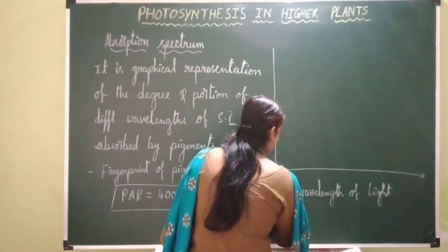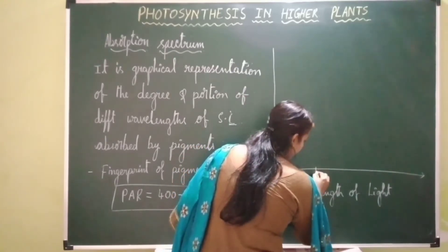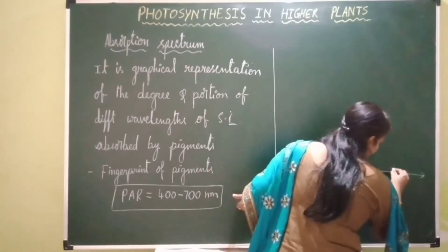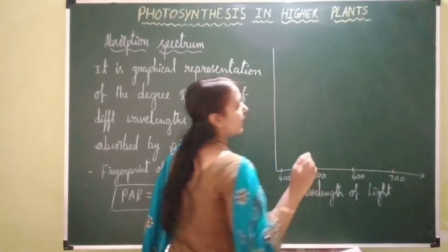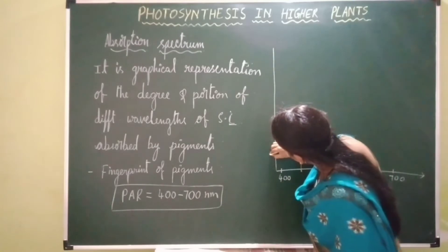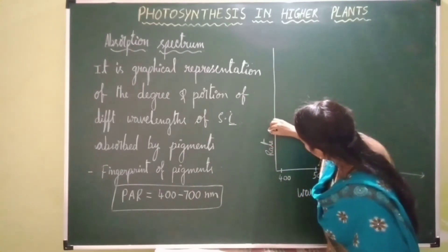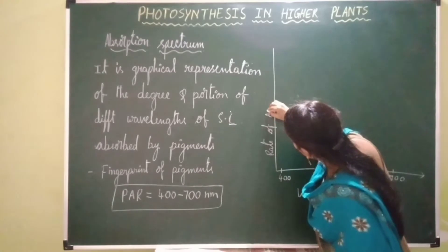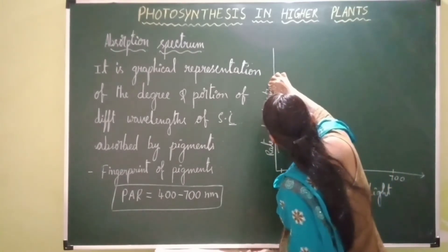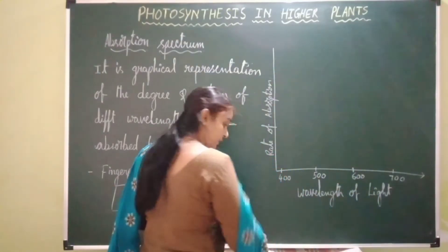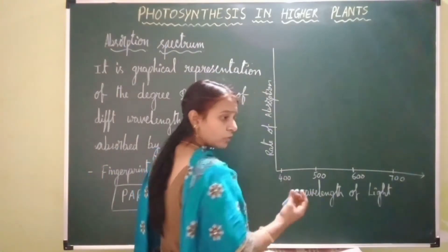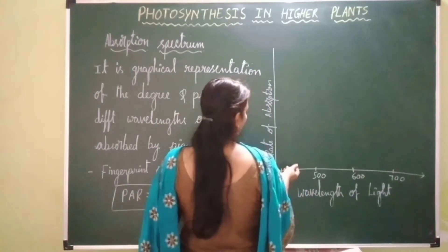So on the x-axis we are taking wavelength of light: 400, 500, 600, 700 nanometers. On the y-axis we are taking rate of absorption of light. Now let's study the different wavelengths absorbed by different pigments — chlorophyll a, chlorophyll b, and carotenoids. So chlorophyll a is blue-green in color. Let's study chlorophyll a first.